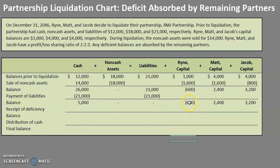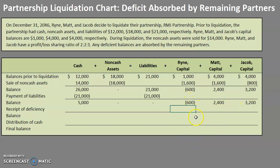Now let's handle this deficiency. There are two options: either the deficient partner pays that cash back to the partnership to bring his balance to zero, or the deficiency is absorbed by the other partners. In this case, it says any deficient balances are absorbed by the remaining partners, so Matt and Jacob need to absorb that $600 deficiency. We absorb it according to their profit-loss sharing ratio, ignoring the deficient partner's portion.